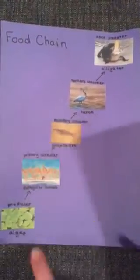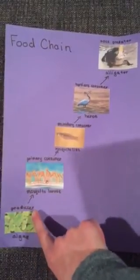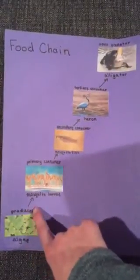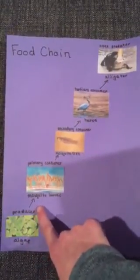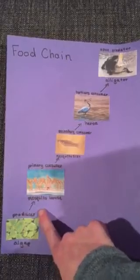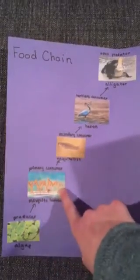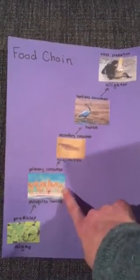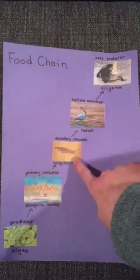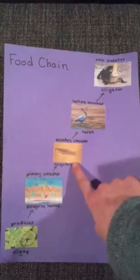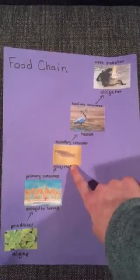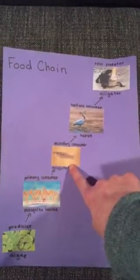Primary consumers eat these plants. In a freshwater habitat, algae is often a producer, and one of many primary consumers is a mosquito larva. The mosquito fish feeds on mosquito larva, making it a secondary consumer.